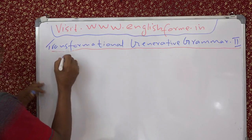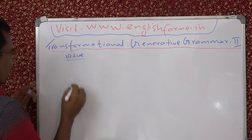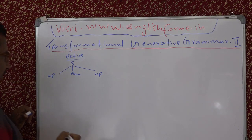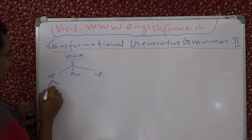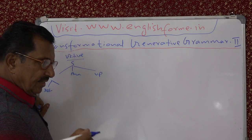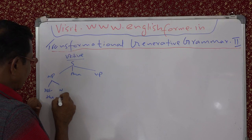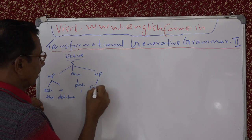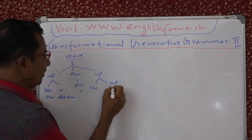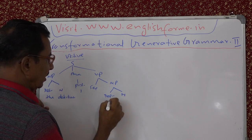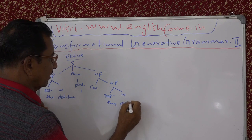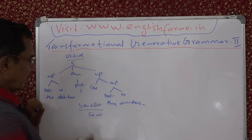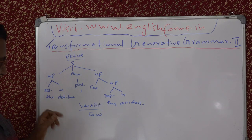The active sentence tree will look like this: S → NP, auxiliary, VP, NP. NP will be determiner and N. NP will be determiner and N: 'the detective.' C plus past — C + past will become 'saw.' So: the detective saw the accident. The passive tree will be: S → NP, auxiliary, VP. You have NP2 — 'the accidents.' Then the BEN insertion and C, and NP1 — here 'the detective.'